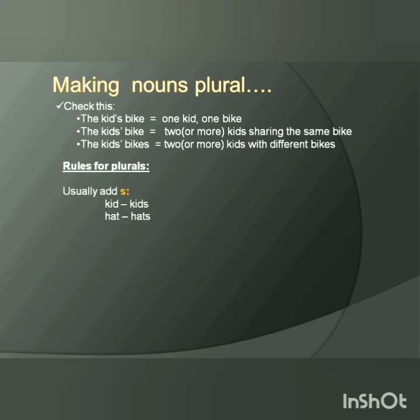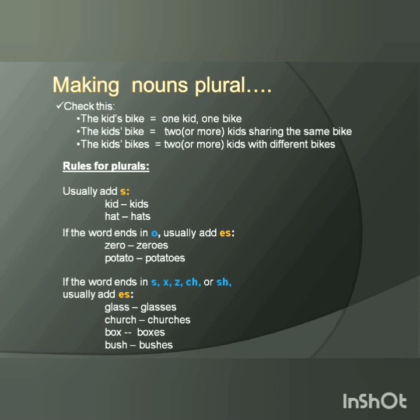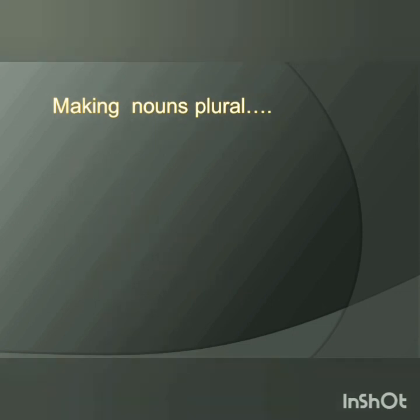We usually add S at the end — like kid, kids; hat, hats. If the word ends in O, usually add ES — like zero, zeros; potato, potatoes. If the word ends in S, X, Z, CH, or SH, usually add ES — like glass, glasses; church, churches; box, boxes; bush, bushes.